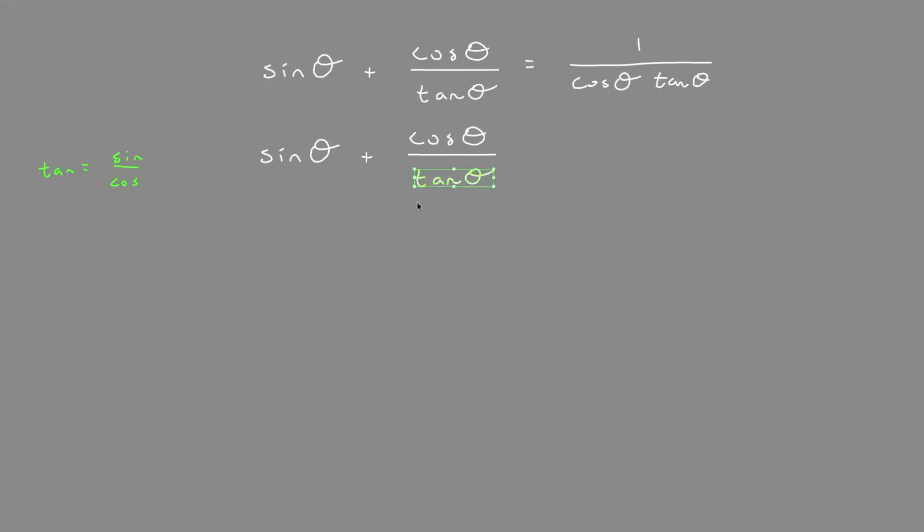So we turn it into sine over cos. This becomes sine over cos. And remember, when we have a fraction in the denominator, we can multiply by the reciprocal. So we'll show the work here. The reciprocal of sine over cos is cos over sine.